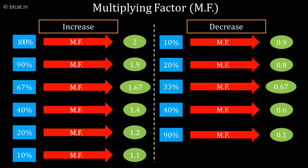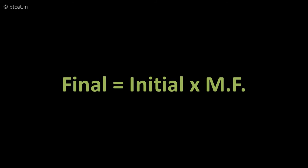The beauty of the multiplying factor concept is that the moment we are given the percentage increase or percentage decrease, we can immediately find the multiplying factor. When we know the multiplying factor, the rule is: Final = Initial × MF (multiplying factor).